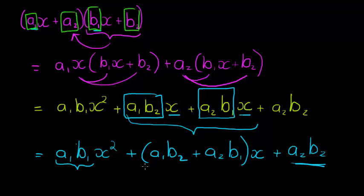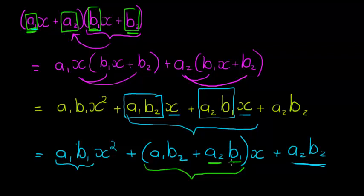However, the middle term is a little bit more tricky. We see that here we multiply A1 — the X coefficient — with B2, the constant, and we multiply the X coefficient in the other bracket, that's B1, with the constant in the previous bracket, that's A2. When we multiply those together and add them, this is what we get.